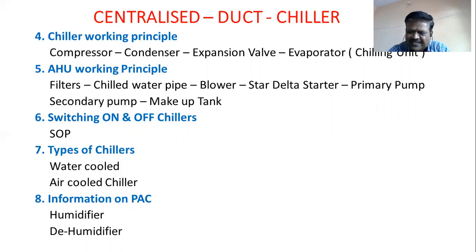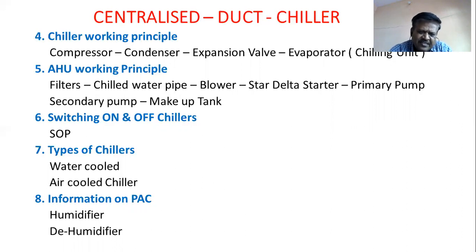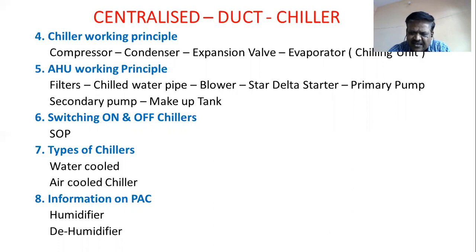Important parameters and devices like VAV, actuators, and dampers related to the air will be explained in detail in the next video. Apart from the AHU, there are other devices: sensors, secondary and primary pumps, and a makeup tank. The chilling unit has a tank filled with water inside which the low-pressure liquid gas circulates through pipes. We cannot see the water level inside this evaporator tank as it is a sealed metal tank.